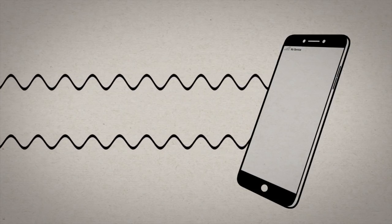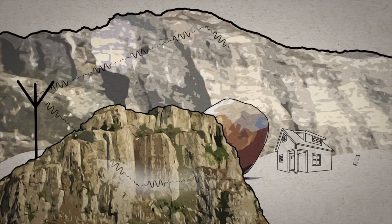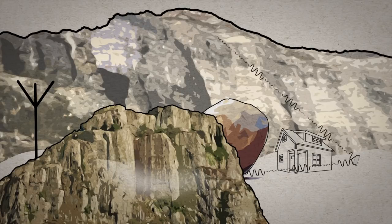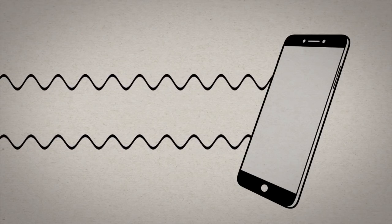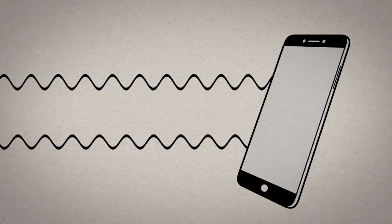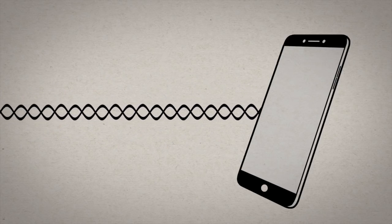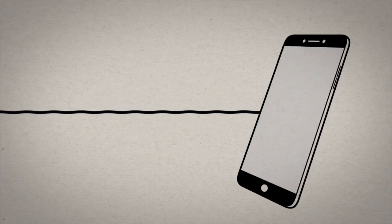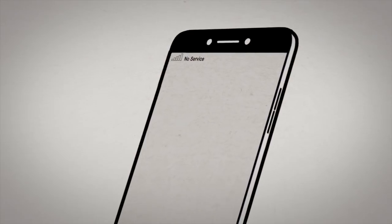We run into a problem, though, when the waves arrive at different times. This happens when two signals travel slightly different distances from transmitter to receiver because they follow different paths. This results in one wave being shifted in time compared to the other. We call this a phase shift. If two signals arrive and one is shifted exactly by half a wave cycle, they cancel each other out, resulting in a lost signal. This is known as destructive interference. It's the bad kind of interference.